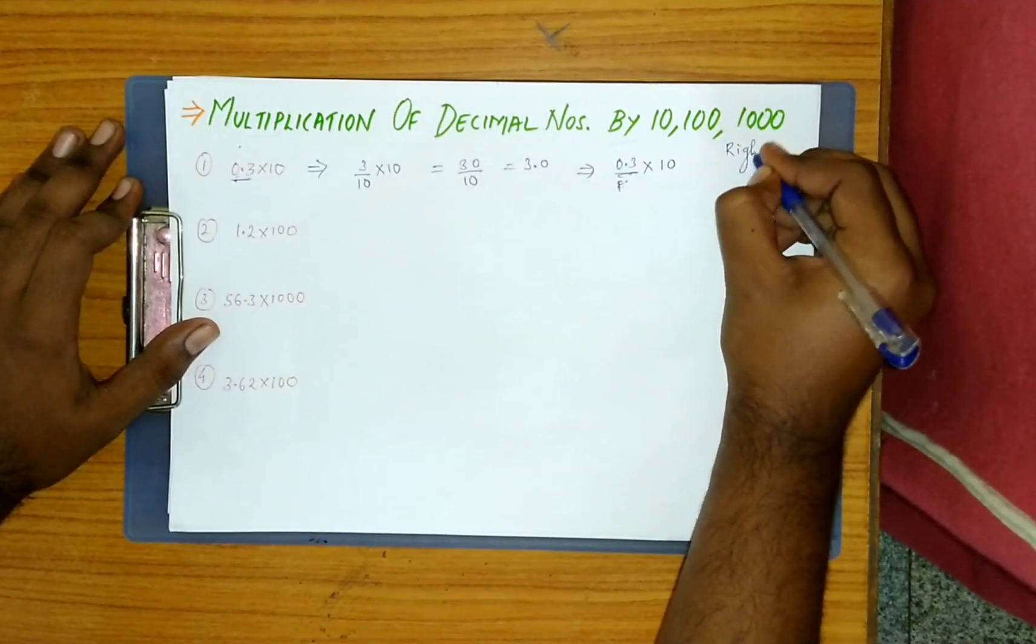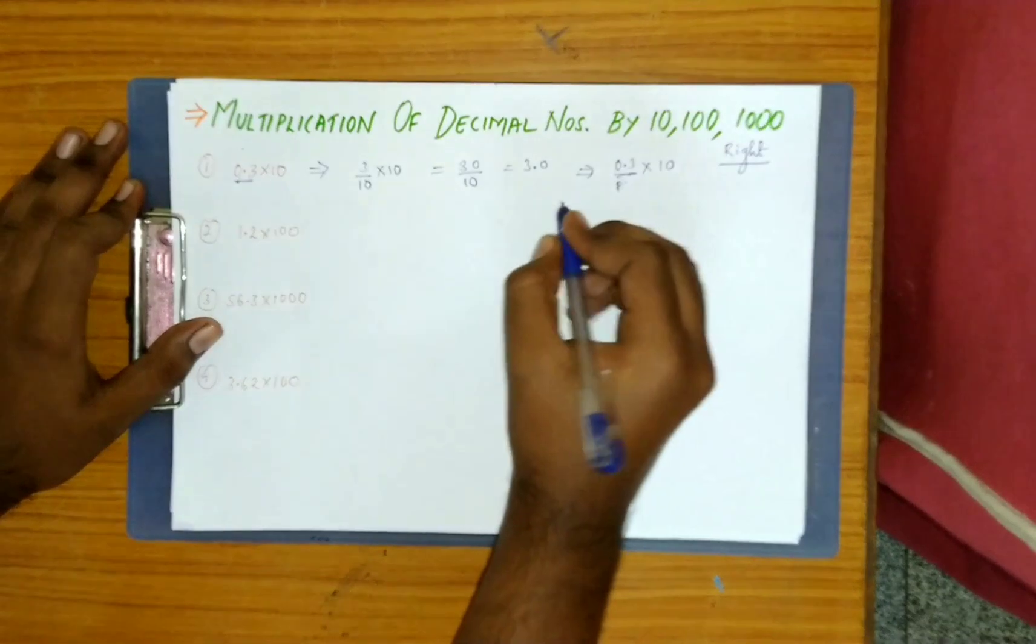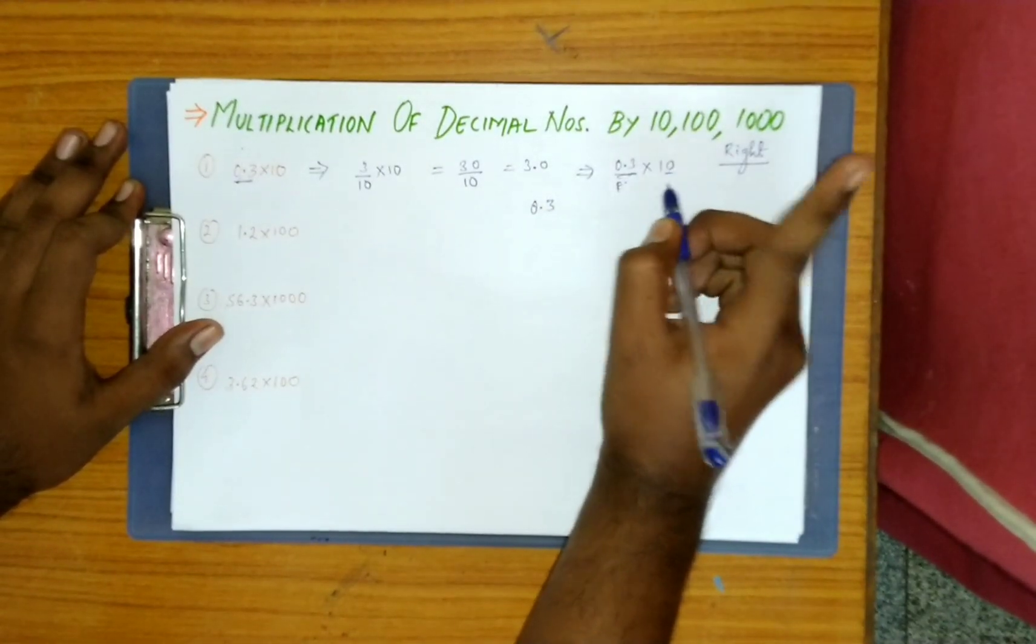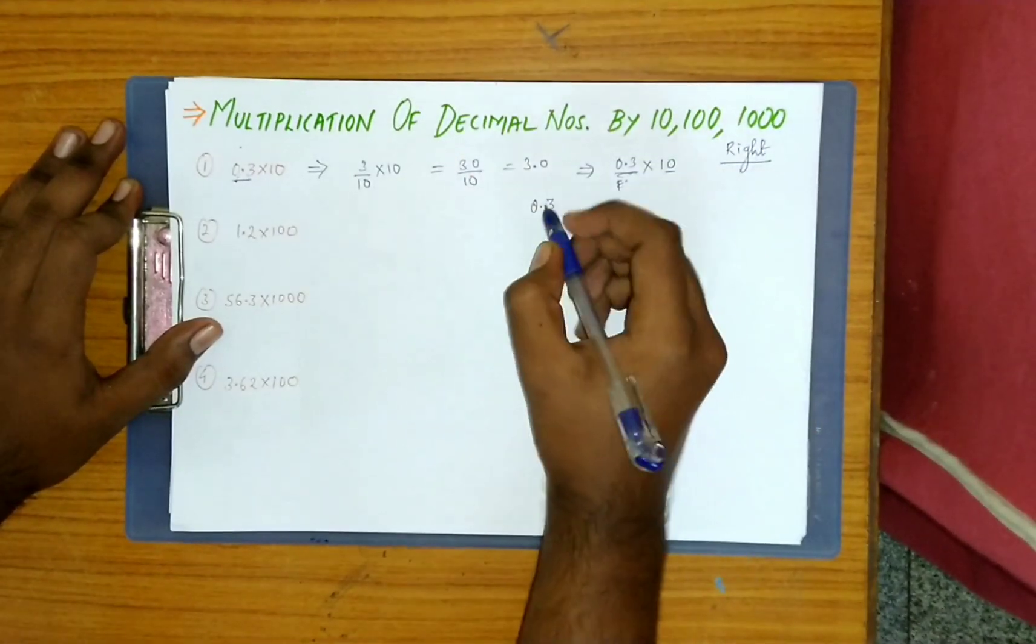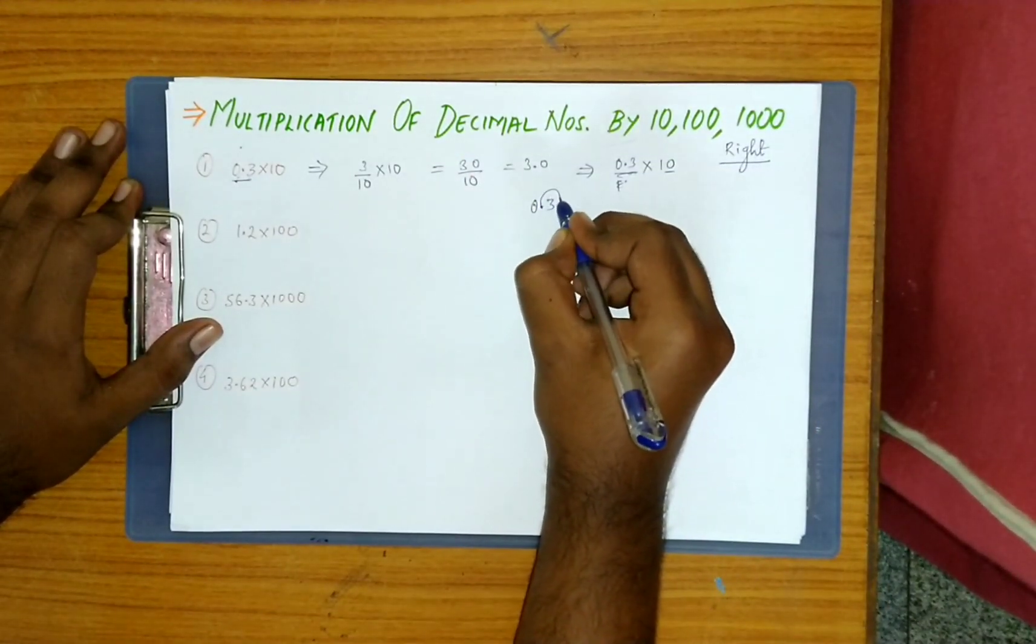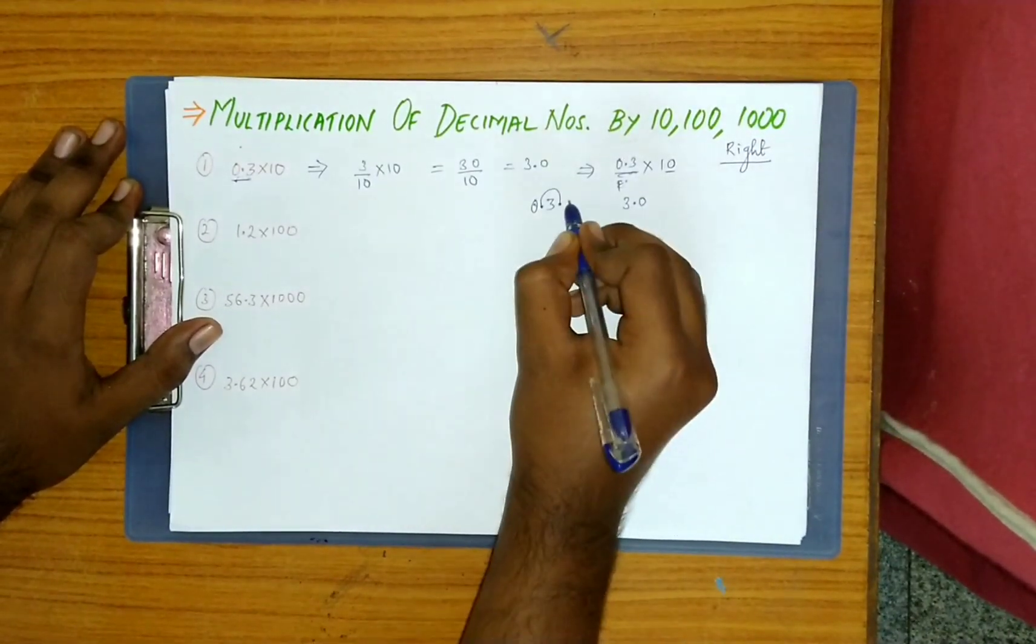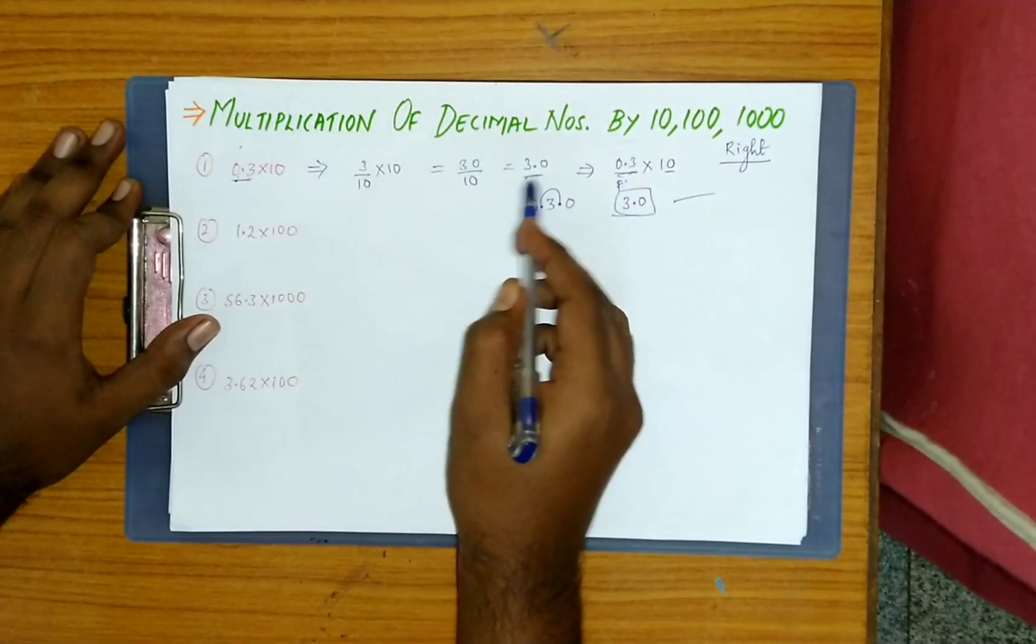See here, 0.3 multiply by 10. How many zeros does ten contain? Only one zero, so the point jumps only one time towards the right. Point is here, jumps only one time, reaches here, so this becomes 3.0. In just one step we got the answer.